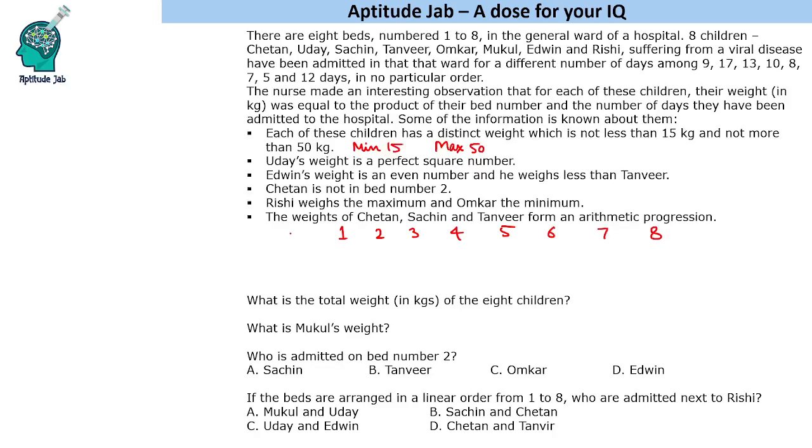Okay, so this is bed number and then we have the number of days and then we will have weight and then we have the children name. So we will have to map all these things.